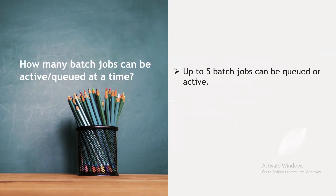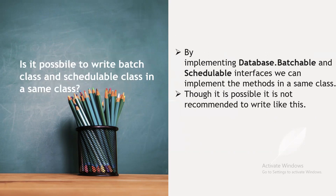How many batch jobs can be active or queued at a time? Up to five batch jobs can be queued or active at a time. Is it possible to write a batch class and a scheduled class in the same class? Yes, by implementing both the Database.Batchable and Schedulable interfaces, we can implement all required methods in the same class. It is possible, but it is not recommended — it is possible but not a best practice.